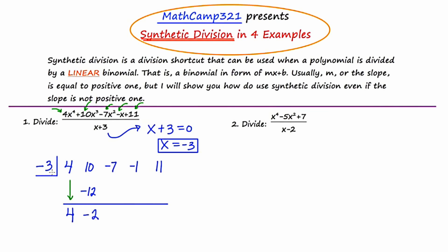Now I'm going to multiply again. Negative 3 times negative 2 is positive 6, and I write that here under the negative 7. Adding negative 7 and 6 gives me negative 1. Multiplying negative 3 times negative 1 gives 3. Then adding negative 1 and 3 gives 2. Multiplying negative 3 times 2 gives negative 6. Adding 11 and negative 6 gives 5. I like to put that last value in a cubby as well — it represents the remainder.